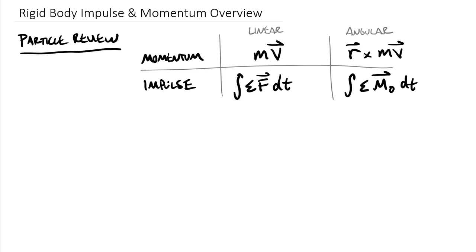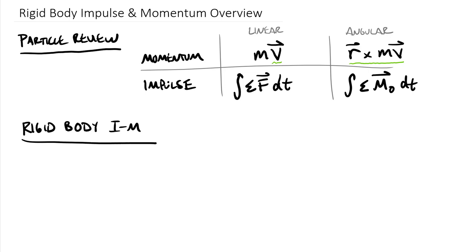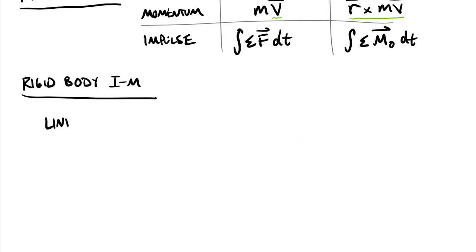Transitioning to rigid bodies honestly isn't that much of a stretch. A couple of things will end up changing. We're going to change the location of that velocity — it'll turn out to be about the centroid. Also, instead of using all of our mass concentrated at one single location, we now have mass distributed. So we need to find out how that mass is distributed, which should make you think about the mass moment of inertia. The impulse terms are going to look exactly the same.